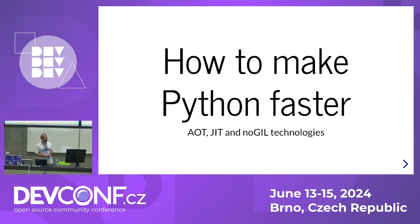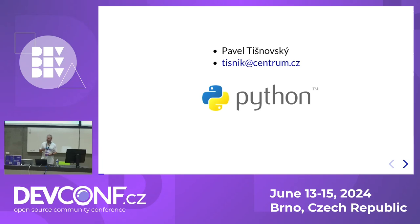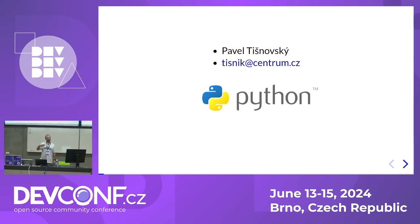Welcome to another presentation about the Python programming language and how to make Python faster. My name is Paul Cisnovsky and I currently work for Reddit on some AI-based systems, because this year everybody works on something related to AI and we use Python there. Personally I have a classic love-hate relationship with Python, because the language itself is pretty good and it's easy to write complex code in it, but the resulting applications are usually slow.